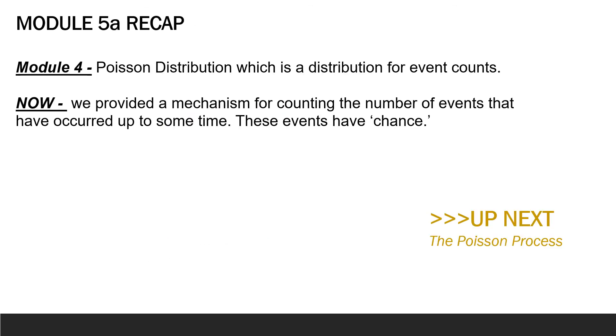And that about sums up counting processes for us. So, let's do a quick recap. Recall that in the previous module, module 4, we went through the Poisson distribution, which is a distribution for event counts. In this module, we provided a mechanism for counting the number of events that have occurred up to some time or equivalently counting events in some time interval. Since we do not definitely know when and truly how many events will occur, we're counting events that occur by chance, so they have some probability associated with them. Further, we provided some assumptions for counting processes to keep in mind moving forward. Now we are ready to consider specific counting processes, like the Poisson process, which uses the rate parameter lambda.